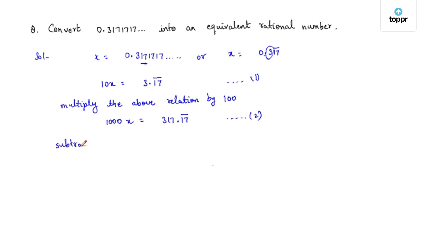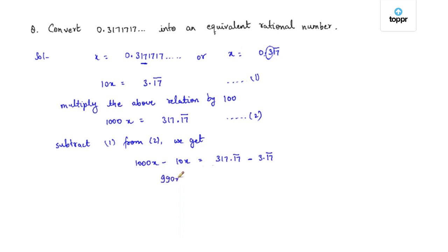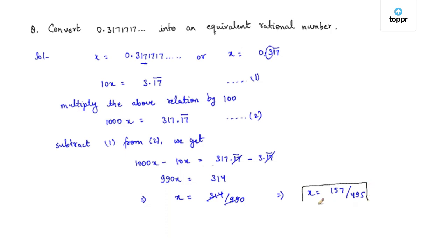Subtracting equation 1 from equation 2: 1000x minus 10x equals 317.17 bar minus 3.17 bar. This gives 990x equal to 314, as the 0.17 bar terms cancel each other. Simplifying, x equals 314 divided by 990, which is 157 by 495. So 0.3171717 and so on is equivalent to 157 by 495.